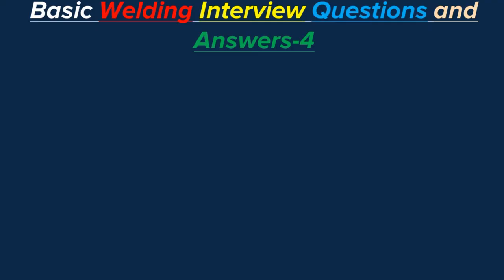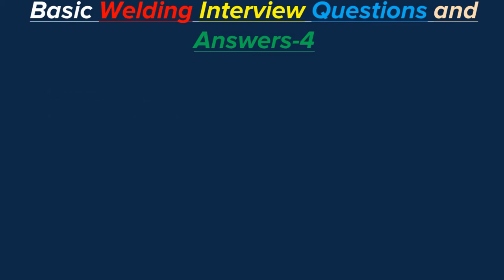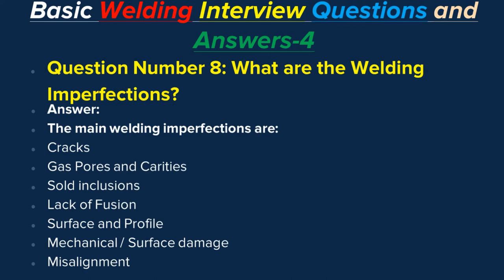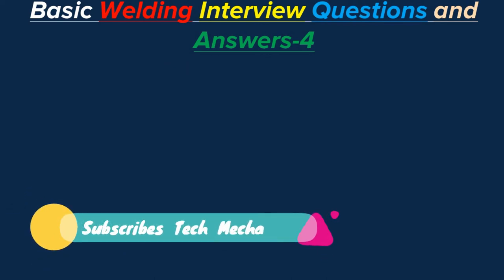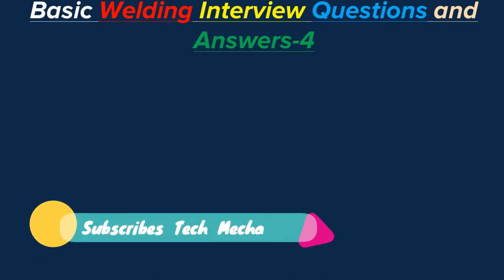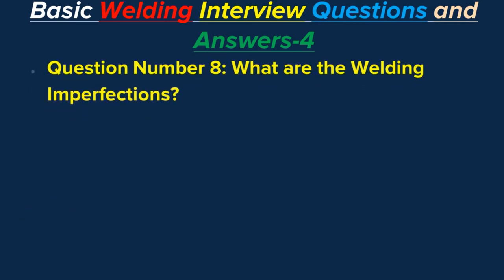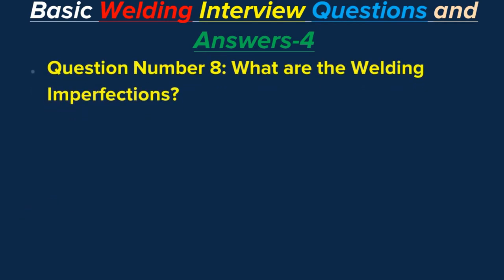Question number eight: What are the welding imperfections? Answer: The main welding imperfections are cracks, gas pores and cavities, slag inclusions, lack of fusion, surface and profile issues, mechanical surface damage, and misalignment.